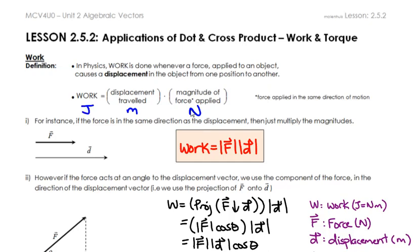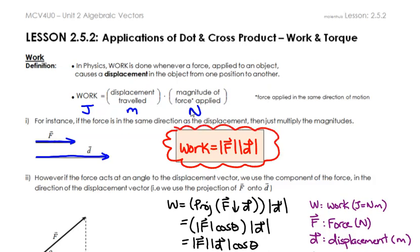In the situation where your force applied and your displacement are in the same direction, your theta between both of those vectors from tail to tail is zero. So all you have to do to calculate work is just multiply the magnitudes of each of the vectors together.